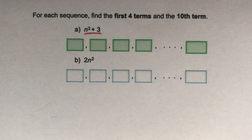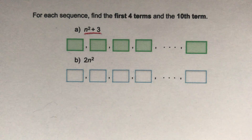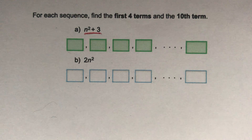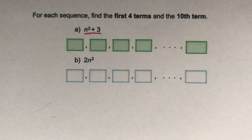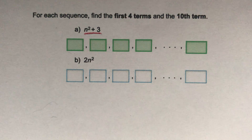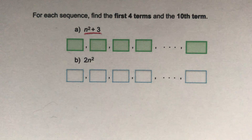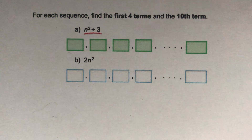In this question, we're given two nth terms that represent different sequences. We're going to be asked to find the first four terms and the tenth term of the sequences.